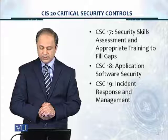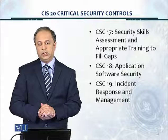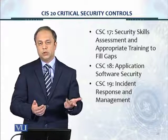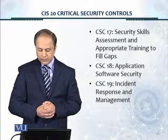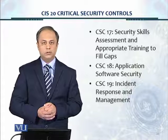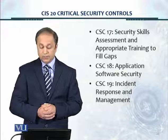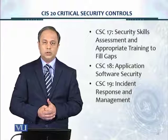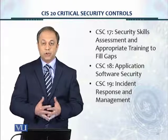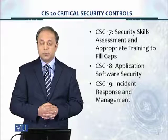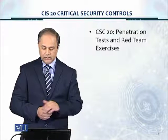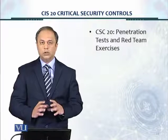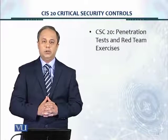CSC 17 is security skills assessment and appropriate training to fill gaps — this is the people part of the three foundations: people, process, and technology. CSC 18 is application software security, which is extremely important and one of the largest areas of concern since most software is developed insecurely. CSC 19 is incident response and management. Finally, CSC 20 is penetration tests and red team exercises. In the next modules, we'll look at each of these 20 critical security controls in detail. Thank you.